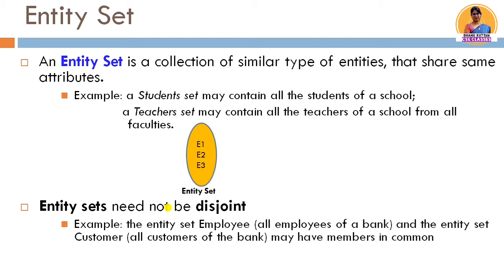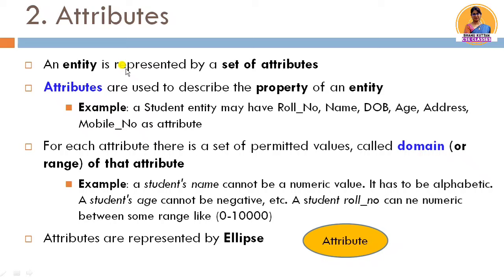Next is attributes. We represent each entity from a set of attributes. Attributes describe the property of an entity. If we talk about the student entity, its properties can be roll number, name, date of birth, age, address, and mobile number — these are attributes. Attributes simply describe the type of property of an entity.